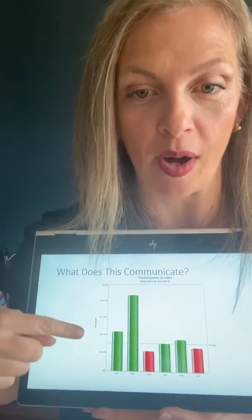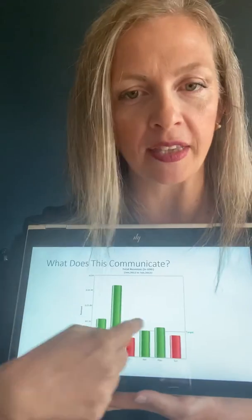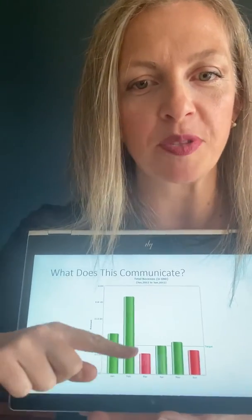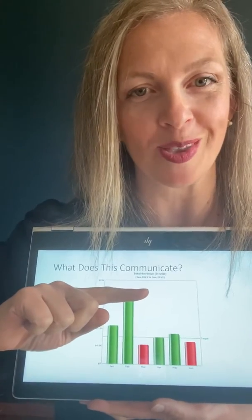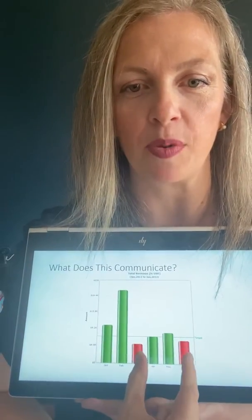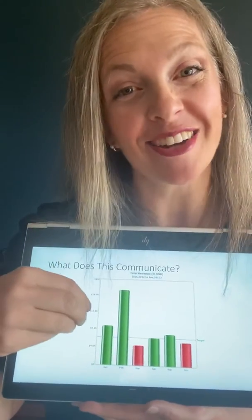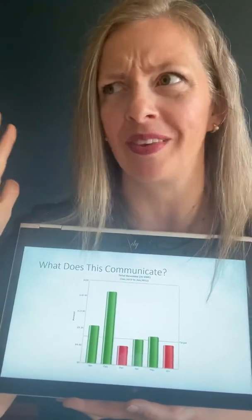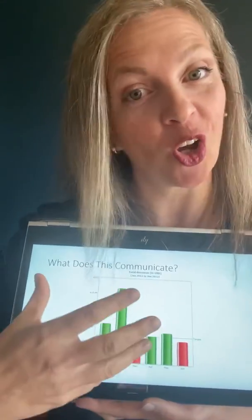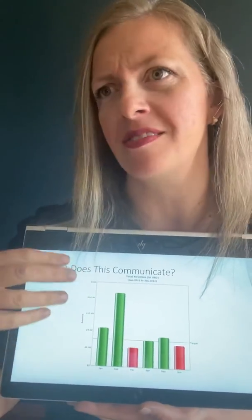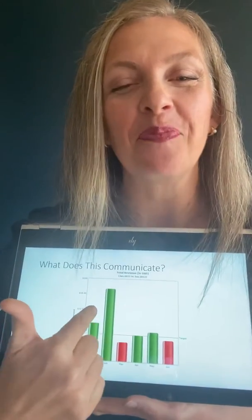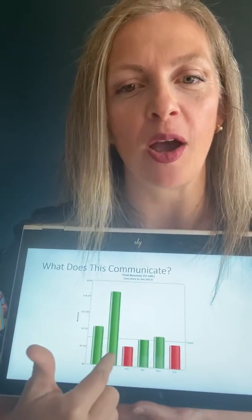Here's an example where we have sort of this target line drawn here, which is a helpful piece of information and helps cue us into why some of the bars are green, again using that principle of similarity, and some of the bars are red. But here's a caution with color: if you're reading this from a western context, chances are you're viewing red as bad because it's associated with danger and stop, and green is good, right? It's beautiful, it's environmental, green means go.